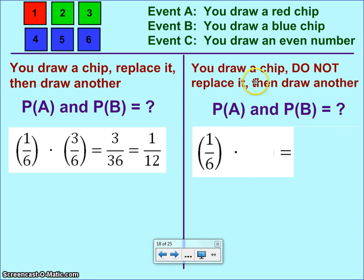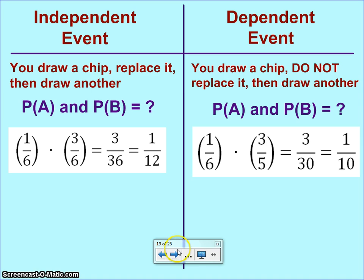Now, in the second situation, we're going to draw a chip, we're not going to replace it. So, the probability of A is still 1/6. But when we do not replace it, what changes to the second probability? And the difference there is that we have one fewer chips in the basket. So, that means that we're not drawing from six chips, we're drawing from five chips. So, you still have three blue chips in there, but your denominator has changed to a five because you have one less chip in there. And if you do the multiplication, you get 3/30, which is 1/10.